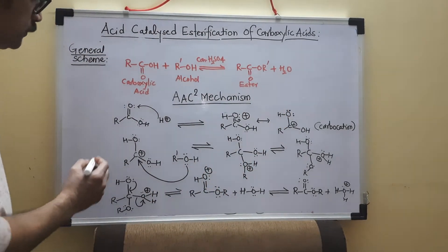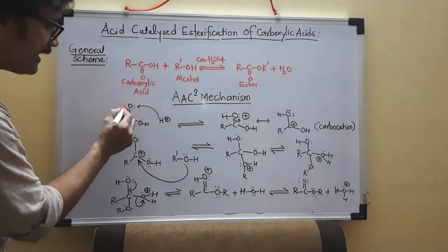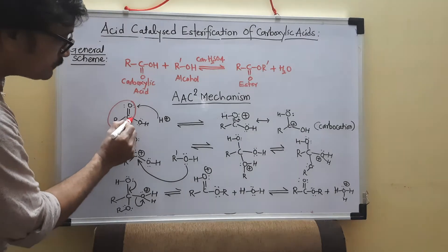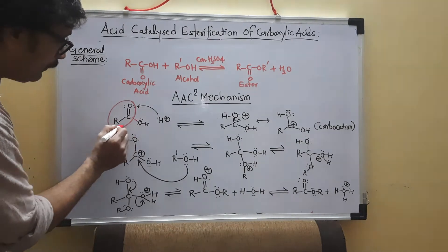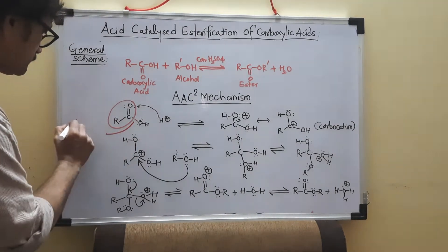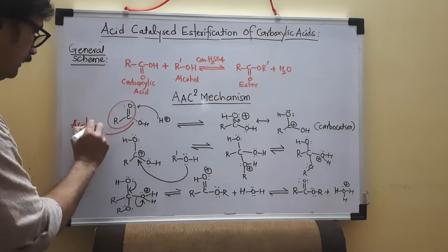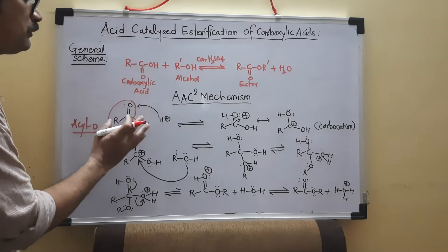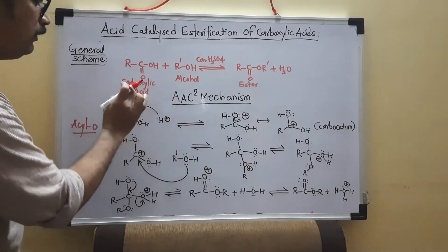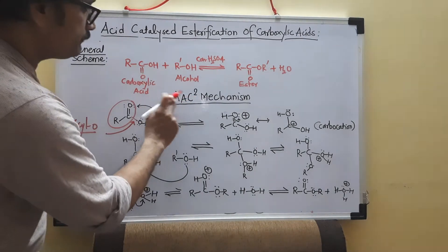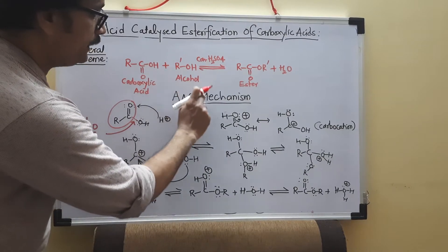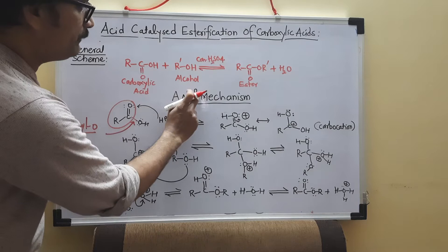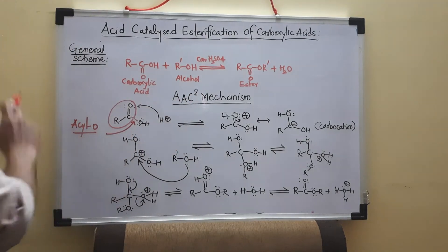Acyl-O bond fission means what? During this reaction, this is acyl group and this bond is broken. So this bond is called acyl-O bond. And during this reaction, this bond is broken. That's why it is called acyl-O bond fission. So because of this, AAC2 name is given.